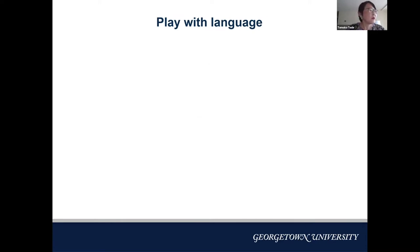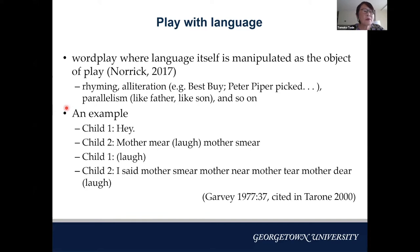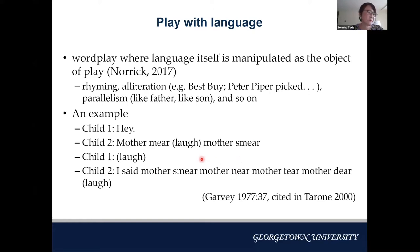Play with language is equivalent to word play, where language itself is manipulated as the object of play. It includes rhyming, alliteration like 'Peter Piper picked,' and parallelism like 'like father, like son.' Here is an example of rhyming: Child One says 'hey,' Child Two says 'mother mia' — laugh — 'mother smear' — laugh — and so on: mother smear, mother near, mother tear, mother dear. These rhyme with each other. We can observe this kind of manipulation in child language use.